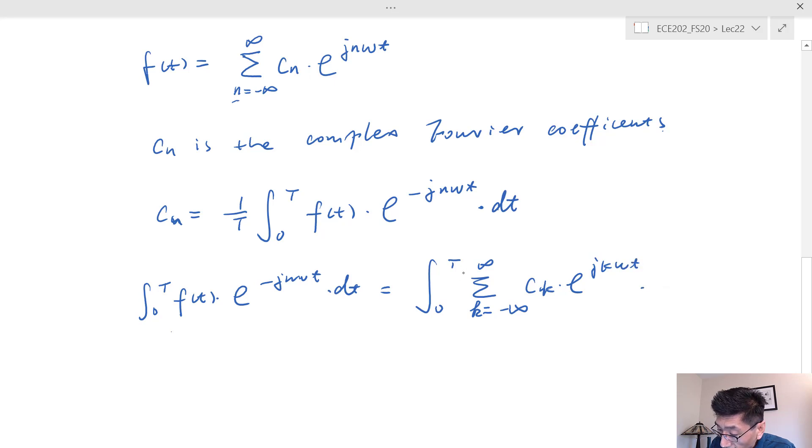And this is f(x), times e^(-j*n*omega*t). As you can see, only when k is equal to n, then we have that constant term.